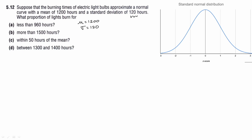What proportion of lights burn for less than 960 hours? So we need to find P of X less than 960. Using the z-score formula, z equals x minus mu over sigma, which gives us 960 minus 1200 over 120 equals negative 2. So we need P of z less than negative 2.